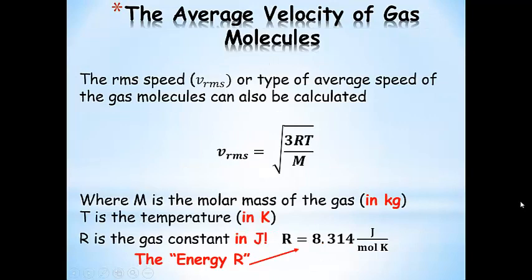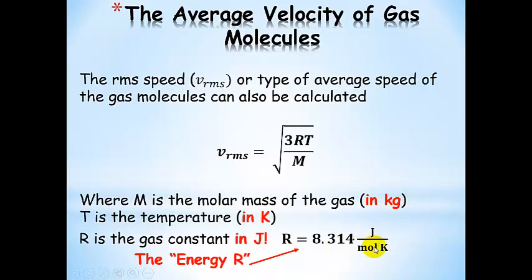We can calculate the root mean square speed — a type of average speed — which comes out of that previous equation. Essentially, it is the square root of three times R times temperature divided by the molar mass of the gas. The molar mass must be in kilograms, not grams, because of the joule unit (kg·m²/s²). The temperature is in Kelvin. With this equation, we can calculate the root mean square speed of a collection of gas molecules.